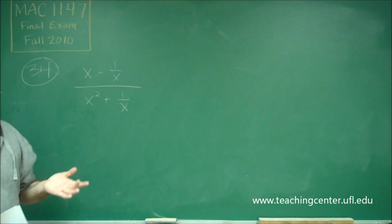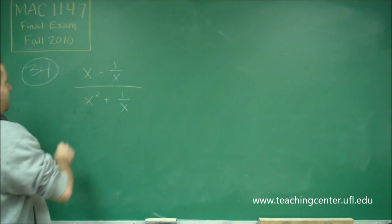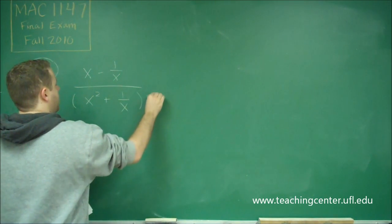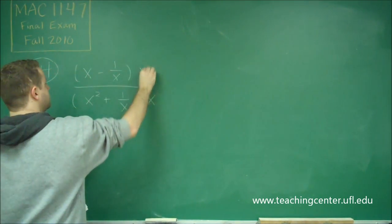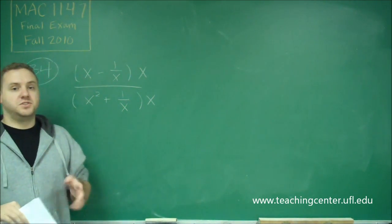Another way you can think about it, which is probably a little bit simpler, is that we just need to multiply the top and bottom by x. As long as you multiply the top and the bottom of the fraction by the same thing, you're not changing it.